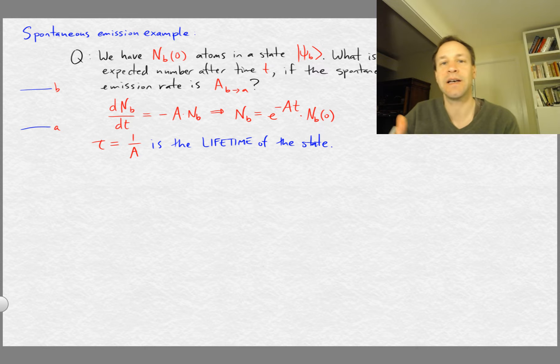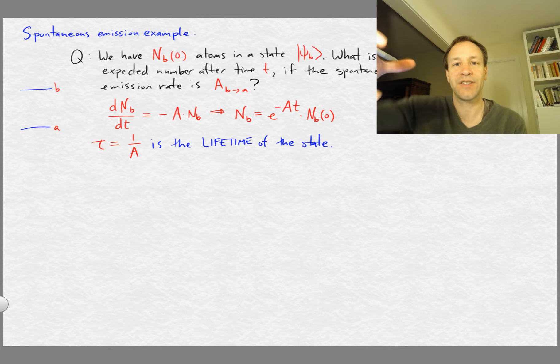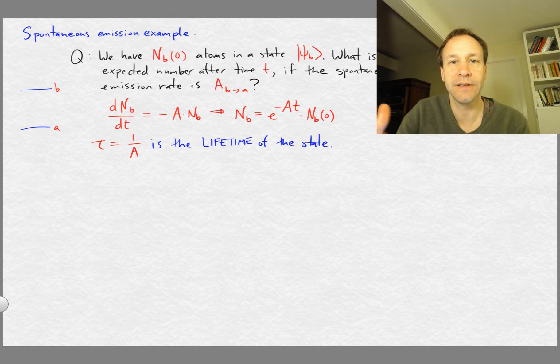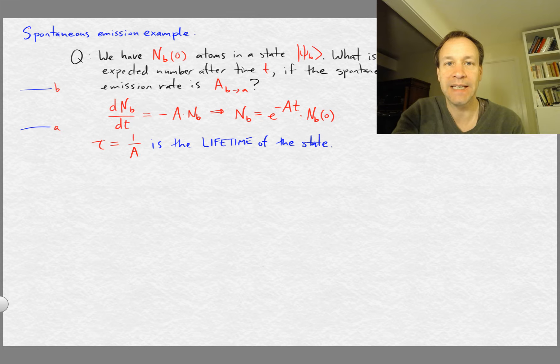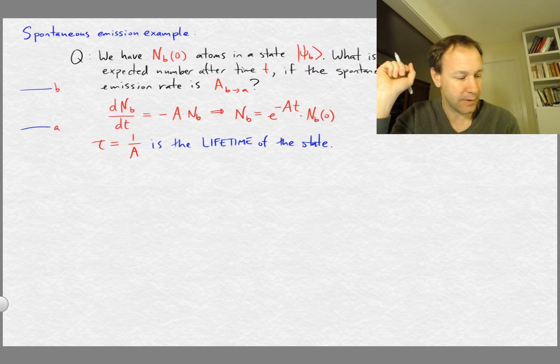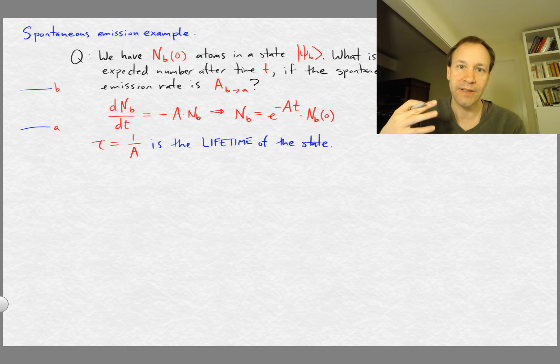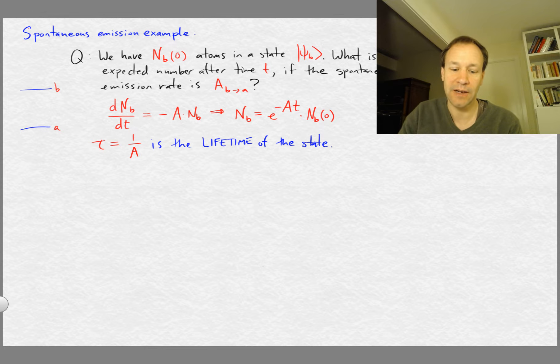And so that's the time after which you would have a fraction 1 over e of your original atoms remaining in the b state. And after twice that time, you have a fraction 1 over e squared and so forth. Just a slight variation on that question.